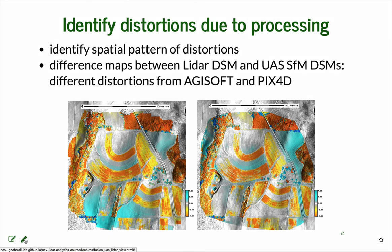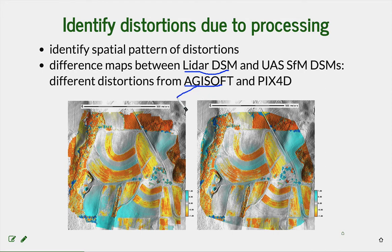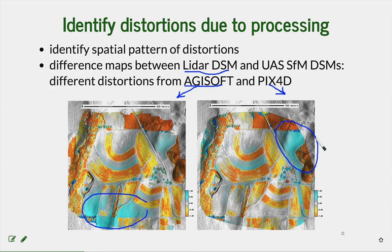Let's look at the differences between the UAS-based DEM and the DEM derived from LiDAR. In the first image, we have the difference between the LiDAR DEM and the Agisoft DEM. The other image shows the same UAS data and the same LiDAR, but processed by different software with slightly different algorithms — PIX4D. You can see that the differences have a different pattern, with major errors in one area from Agisoft and major errors or distortions from PIX4D in another area.